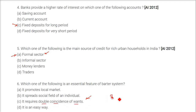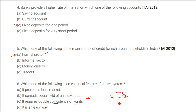That is, the person who is selling something and the person who is buying something — they both should have a requirement for each other's product. Otherwise, the barter system between them is not possible; exchange is not possible.